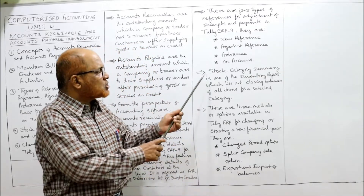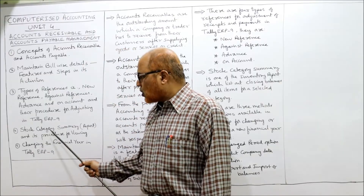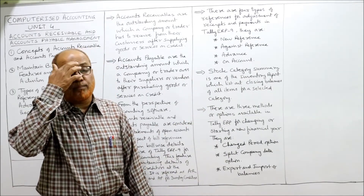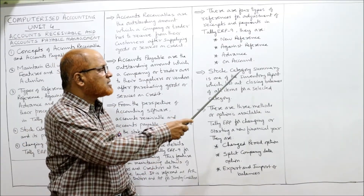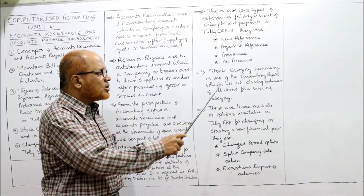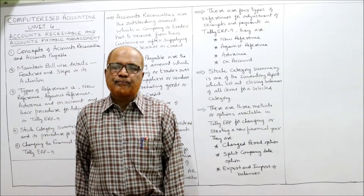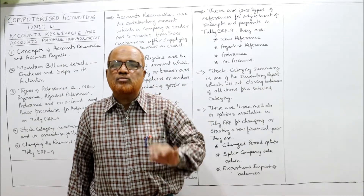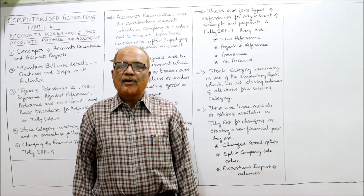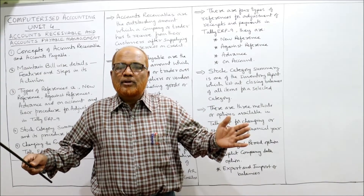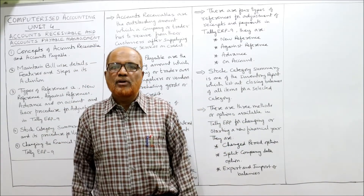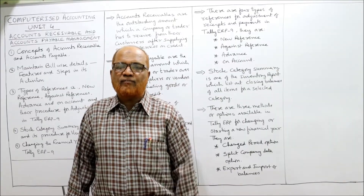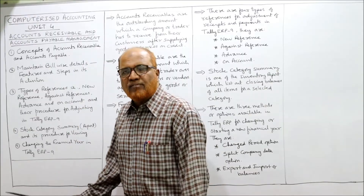The fourth point is regarding the stock category summary report. Stock means inventory. The stock category summary is an inventory report that lists the closing balances of all items in a selected category. When we specify a selected category, we can find out the closing balances of all stock items in that category. All inventory items must first be categorized, and then the stock category summary report gives the details of closing balances for all items in the selected category.